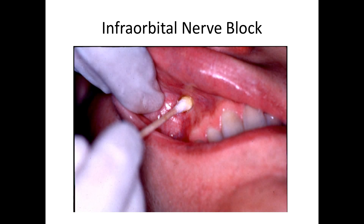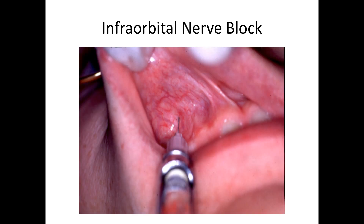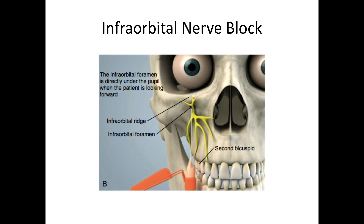To perform the block, if you have time, apply a topical anesthetic on a cotton tip swab approximately one minute prior to the procedure. Then dry the mucosa and retract the upper lip. Make the puncture in the mucosa opposite to the upper second bicuspid and insert the needle in a cephalad direction. With a finger continuing to palpate the infraorbital notch, aspirate first, then inject 2-3 cc's of 2% lidocaine. Some people like to massage the area to keep most of the anesthetic in the target region. Do not inject in the foramen, but just outside of it.